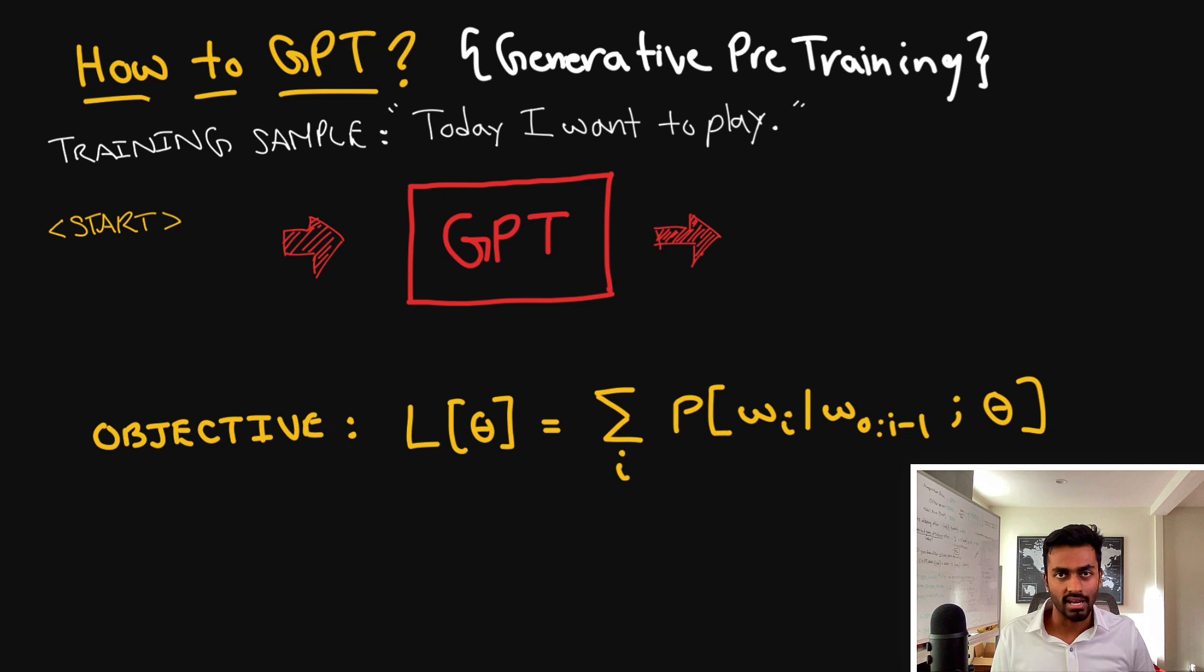In order to do generative pre-training the goal is to optimize for the problem of language modeling. Now if we want to make GPT a language model, language models have an understanding of word sequences. Its main objective is to predict what word is going to come next given the context of all the previous words that have come before it. Mathematically represented that's exactly what this is but we'll get to that. So let's say that we have one training example where we just basically scour the internet for random sentences. One of those sentences is today I want to play.